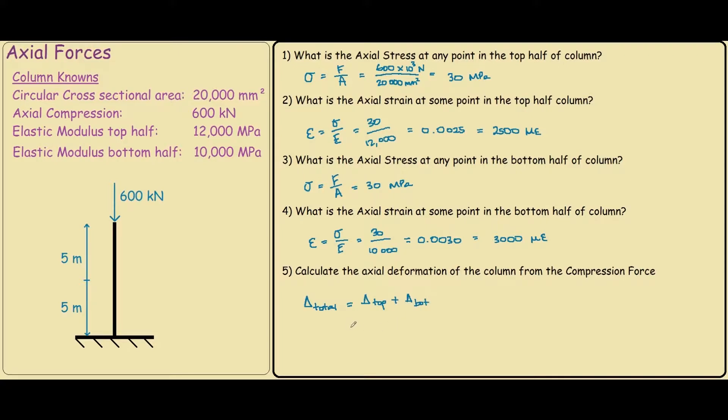And how we find these deformations is we look at the strain. So on the top, the strain was 0.0025, and we multiply that by the top half length of the column, which is 5 meters. And the strain at the bottom of the column is 0.0030, and we multiply that by the length of the bottom of the column, which is also 5 meters. So if you calculate this, it would equal 0.0275 meters, or if you want to express in millimeters, you multiply it by 1,000, so it would be 27.5 millimeters. And this is how much the column shortens under a 600 kN compressive force.